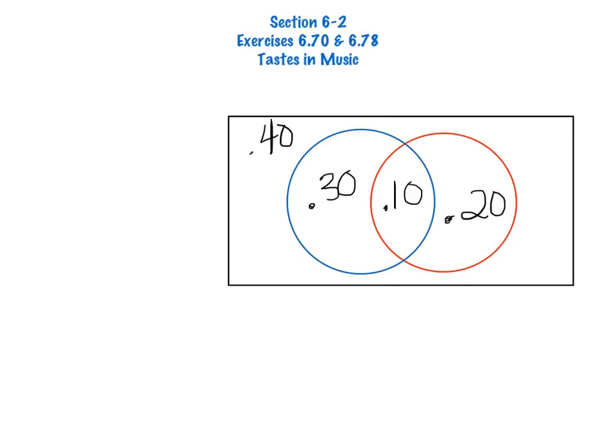Now, exercise 6.78 takes us to the idea of conditional probability. There is a formula for conditional probability. I would like to save that to the end, and let's think about this intuitively. Remember that no matter what we are talking about, probability is the number of favorable outcomes divided by the number of total outcomes.